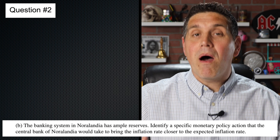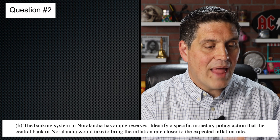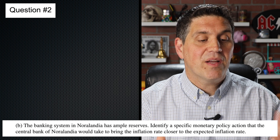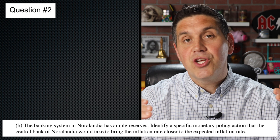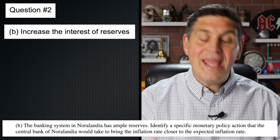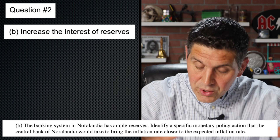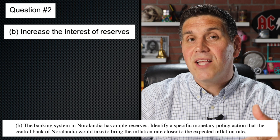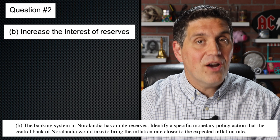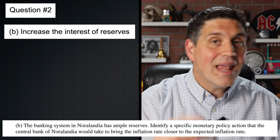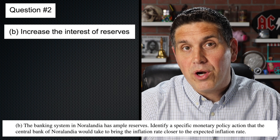Now in B, it introduces the new monetary policy stuff, saying that banks have ample reserves. Identify a specific monetary policy that could cause inflation to go down. The answers would be an increase in the interest on reserves, or you could say an increase in administered rates. But what you couldn't say is anything about open market operations — don't say anything about selling bonds because in ample reserves, that monetary policy doesn't really work.